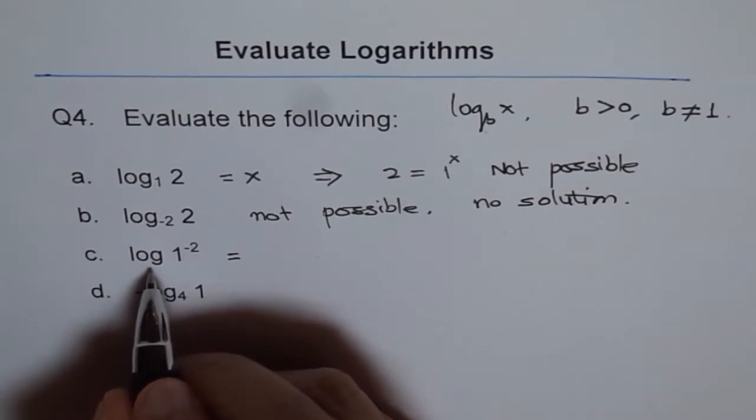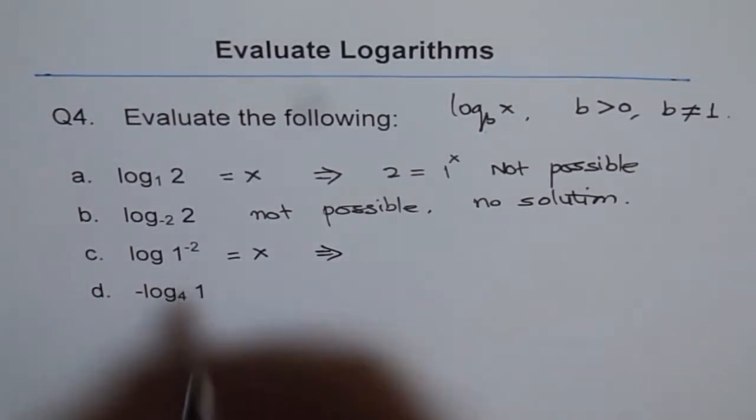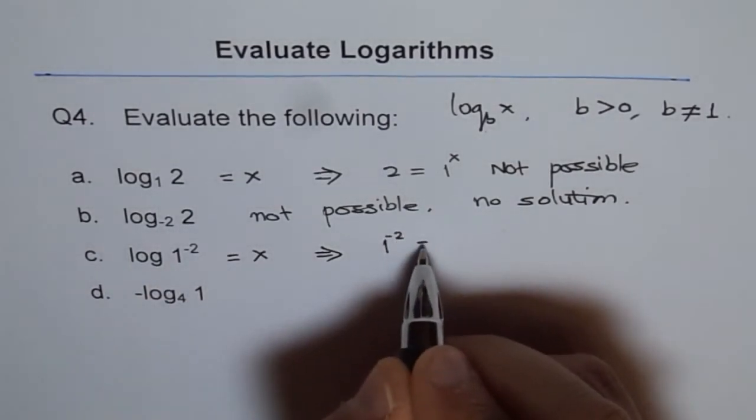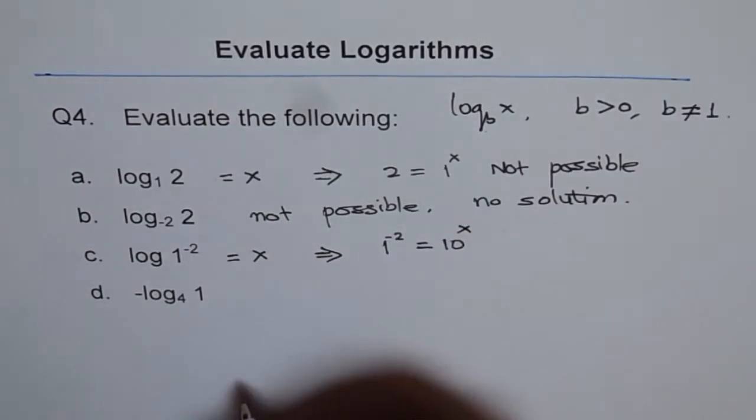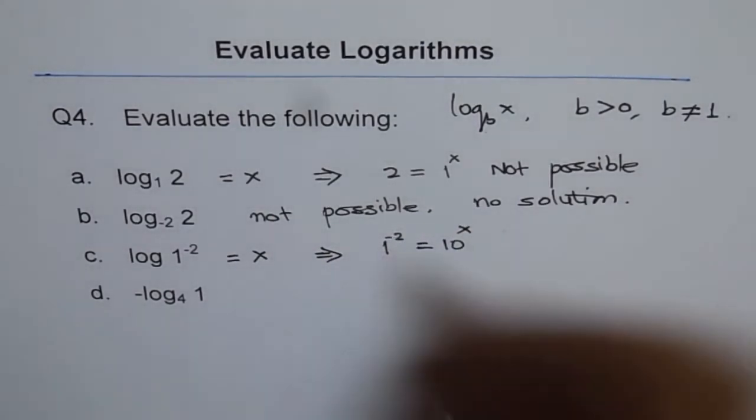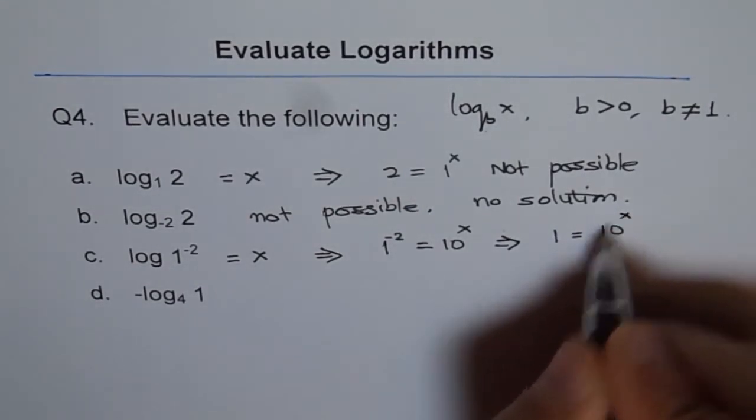Let's say that log to the base 10 of this is x. It means 1 to the power of -2 is equal to 10 to the power of x. Now, 1 to the power of anything will only be 1. So it is 1 equals to 10 to the power of x.